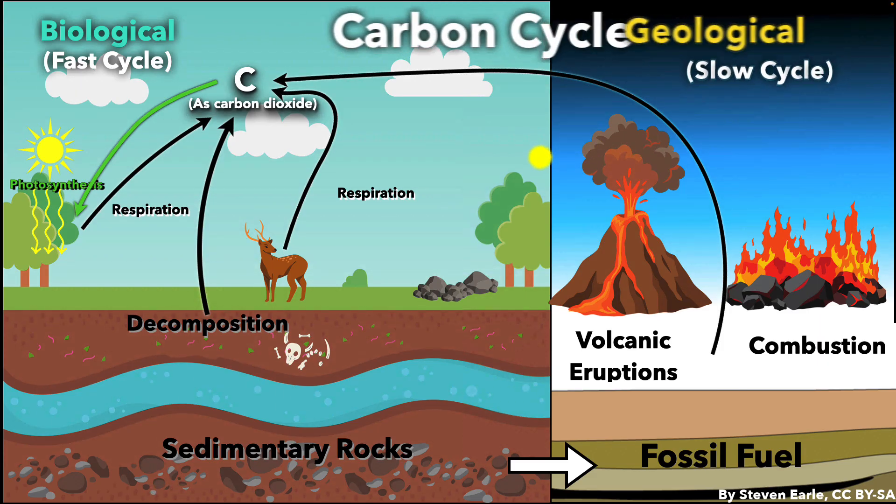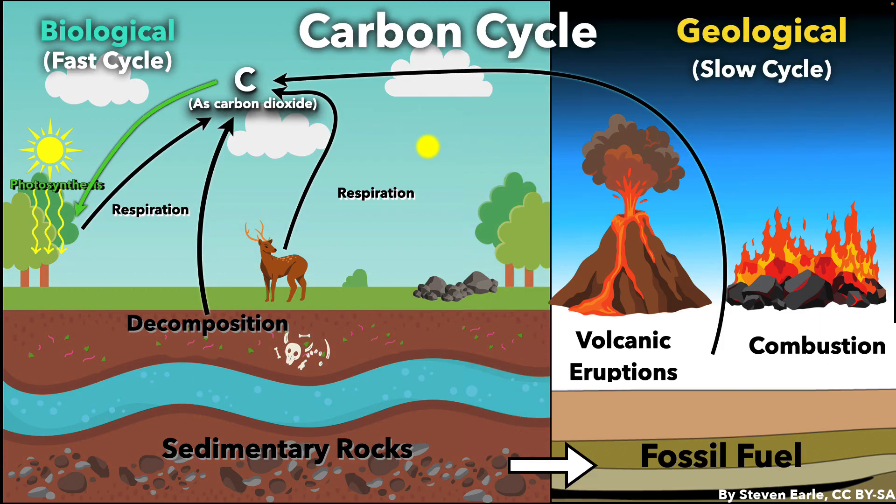So in summary, carbon is always moving from one reservoir to another through living organisms, land, ocean, and deep underground. The biological carbon cycle happens over days to years. The geological carbon cycle can take millions of years. And remember, carbon isn't created or destroyed in the cycle. It just changes form and location.